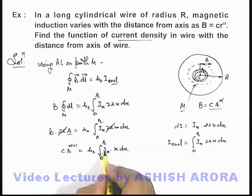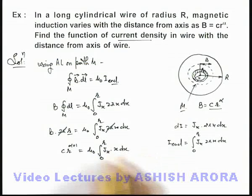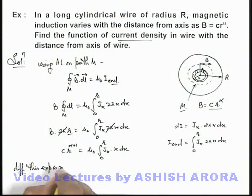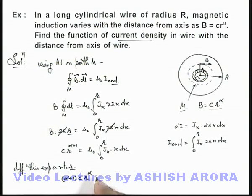We are required to find the current density as a function of r. We can differentiate this expression with respect to r, which is the distance from axis. Then it will become (α+1)cr^α equals μ₀. On differentiating, the sign of integration can be removed, and this will be J(r) · r.